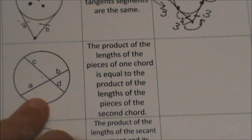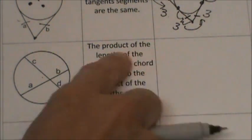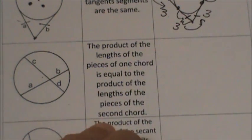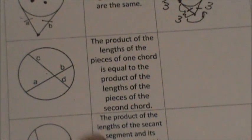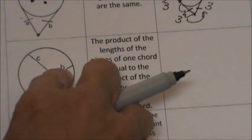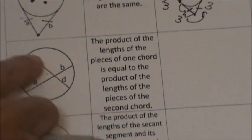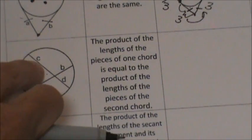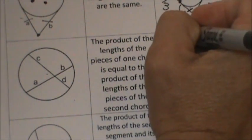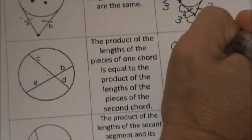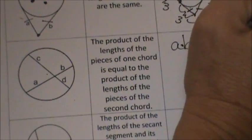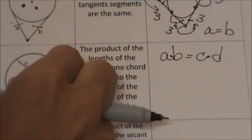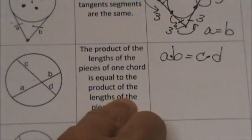Now let's look at chords. The formula says the product of the lengths of one chord's pieces is equal to the product of the lengths of the second chord's pieces. If one chord is labeled A and B, and another chord is labeled C and D, we multiply A times B and set it equal to C times D.